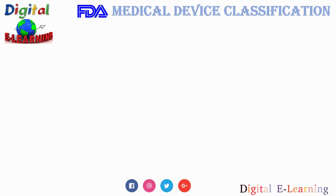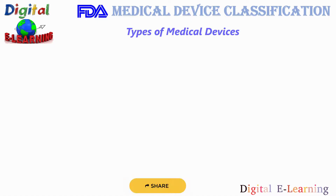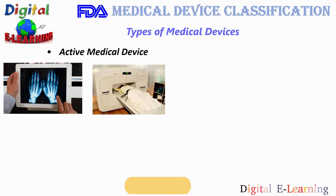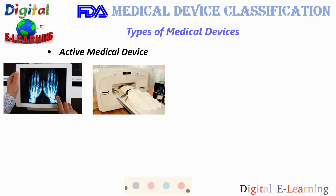Now let us understand the different types of medical devices. First are active medical devices. Active medical devices are those that rely for their functioning on a source of electrical energy, or any source of power other than that directly generated by the human body or gravity, and which act by converting this energy. Active medical devices tend to be more complex in nature than non-active medical devices. Examples include ultrasound scanners, lung ventilators, X-ray machines, pacemakers, and physiotherapy equipment.